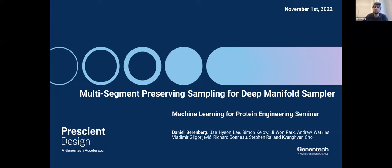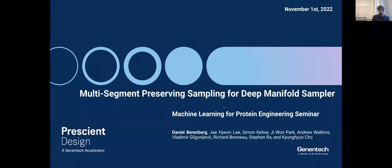Today he is going to be talking about multi-segment preserving sampling for deep manifold samplers. Currently he is a full-time machine learning scientist at Prescient Design, which is a Genentech accelerator, and also a PhD student at NYU. Just a reminder: throughout the seminar, if you have any questions, feel free to put them in the chat. There will also be the opportunity to ask questions and unmute yourself at the end. Dan, whenever you're ready to take it away.